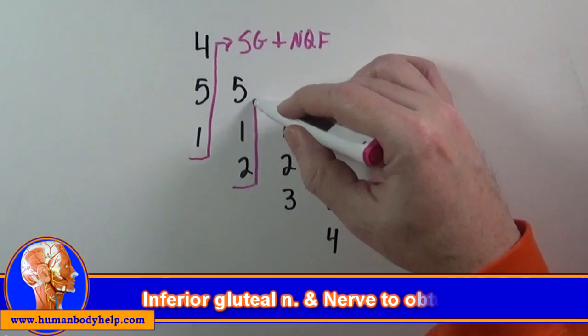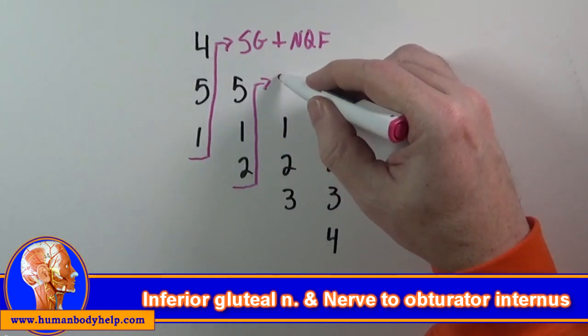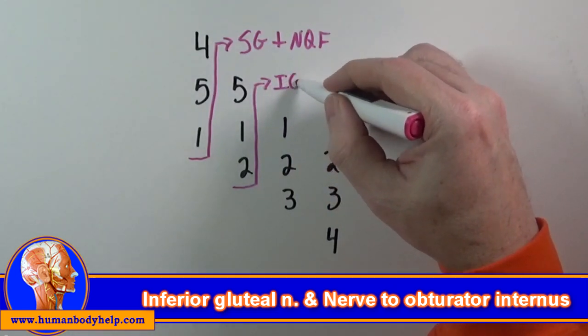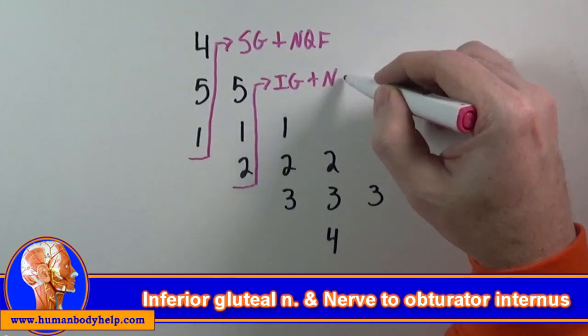This next group, L5, S1, and S2, make the inferior gluteal nerve and the nerve to obturator internus.